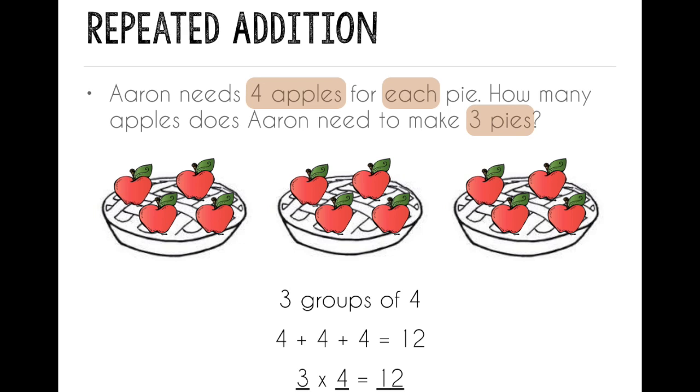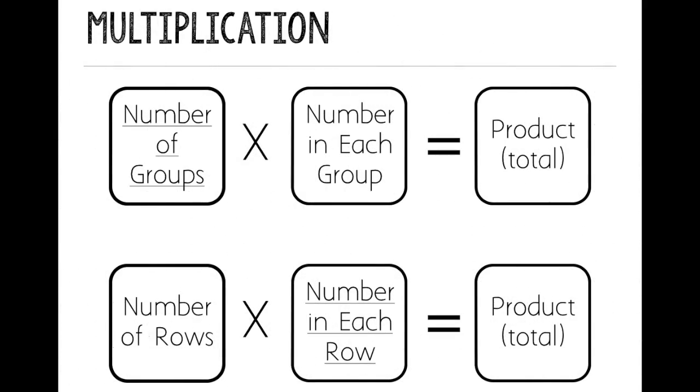And if you turn your paper over, we'll write some reminders on how to write a multiplication sentence. When you're multiplying, the first factor is the number of groups, so you count how many groups you drew. Then you multiply, you put the x, by the number in each group. And then you have your product, it equals your product, which is your total, the total number of objects.